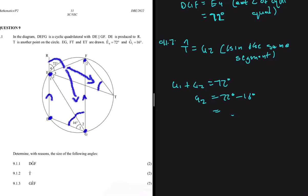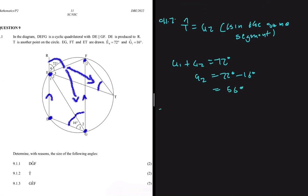So angle T is also 56 degrees because it is equal to G2. Let's move forward and do 9.1.3. So 9.1.3 is saying let's find the size of angle GEF. Let me just clear up the sketch because it's starting to look messy now.